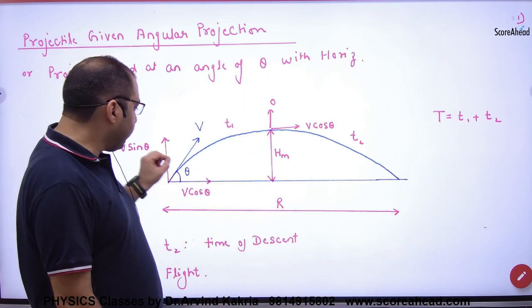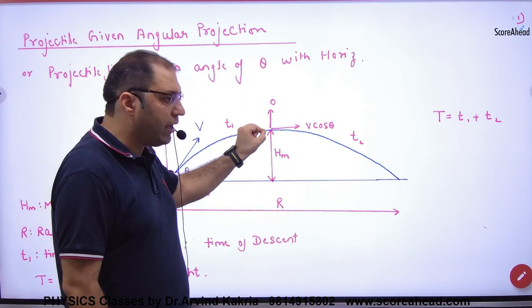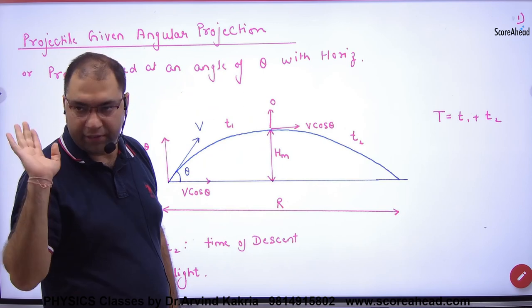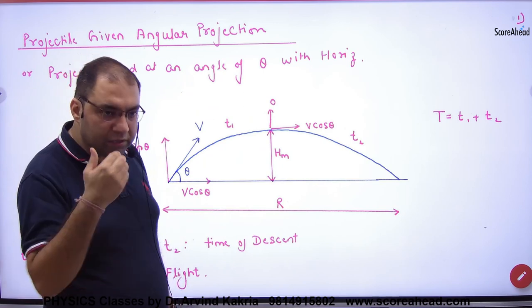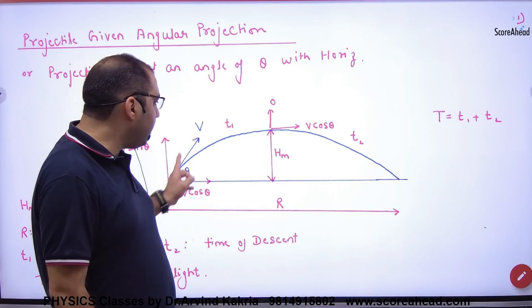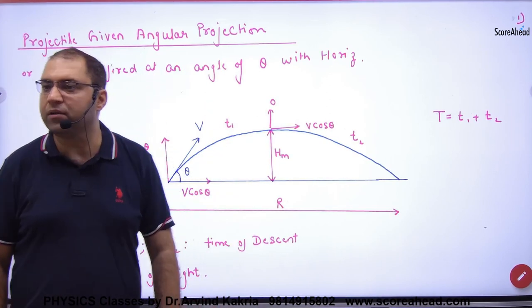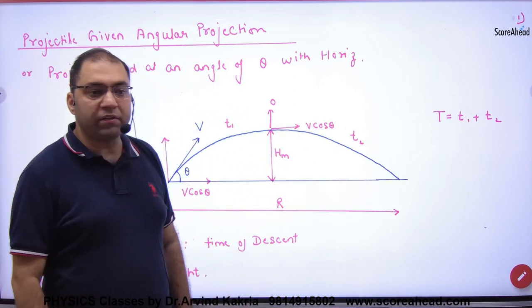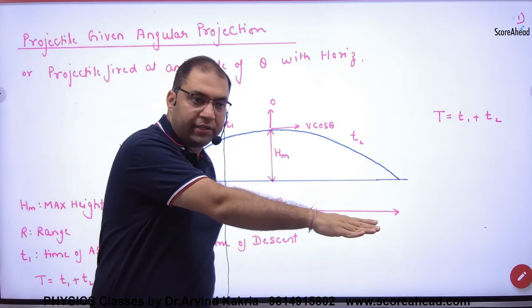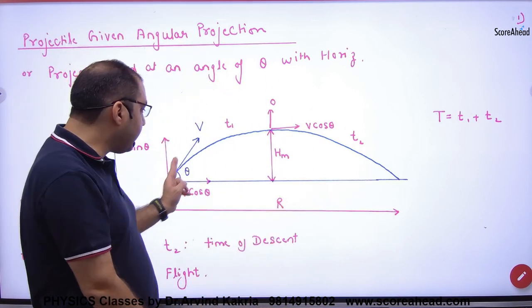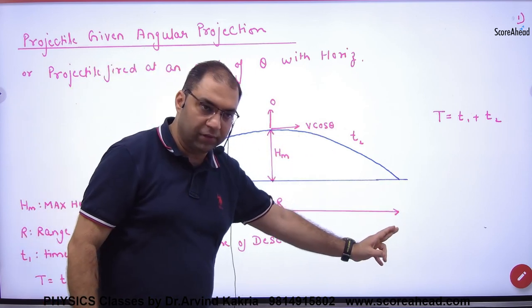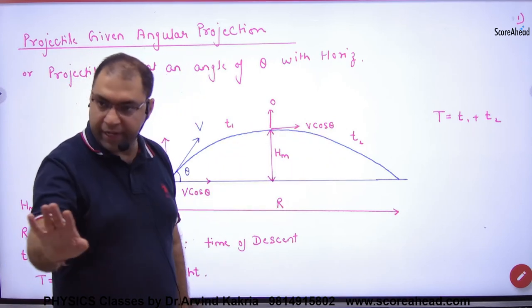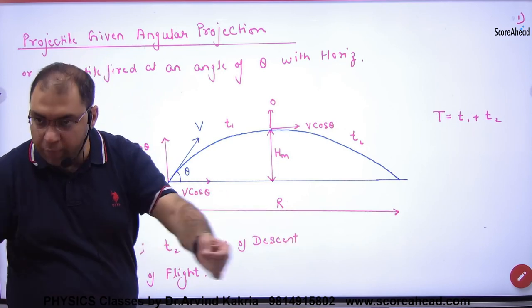Maximum height — this is the maximum height attained by the projectile. Second point: the projectile goes from the launch point to the top, and the time taken for this is T1, called time of ascent. Time of ascent means how much time the projectile takes to go from the launch point to the topmost point. Then the projectile comes from the topmost point back to the ground — that time is called time of descent.